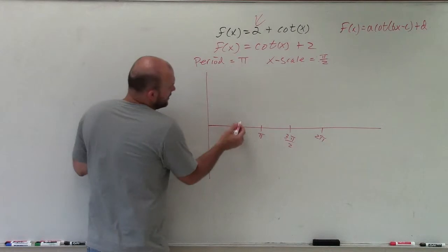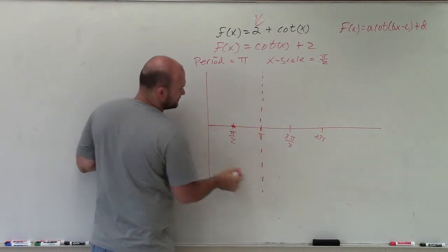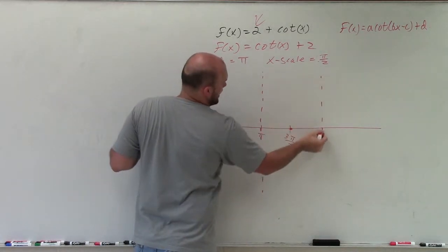Now, the cotangent graph, the first x-scale represents the x-intercept. The second x-scale represents the asymptote. Then we go x-intercept, asymptote.